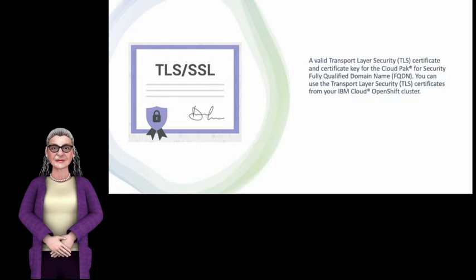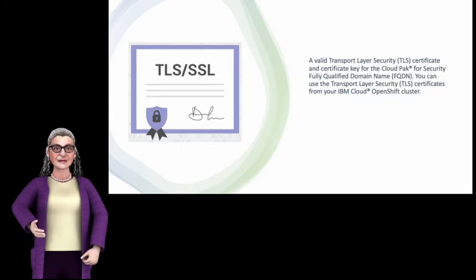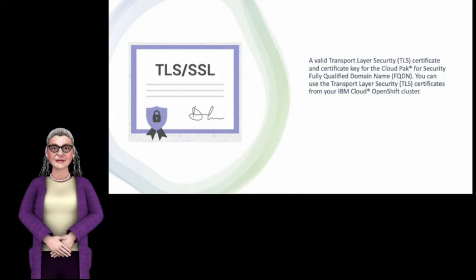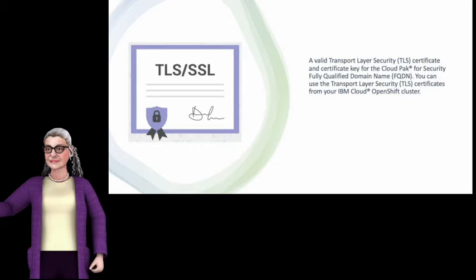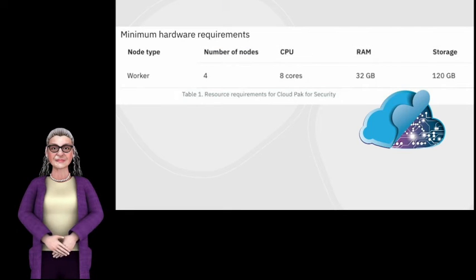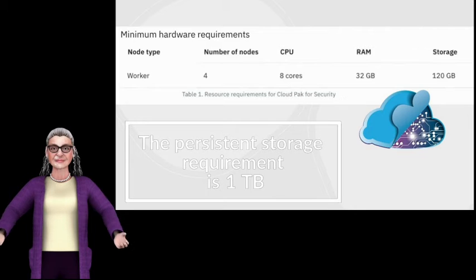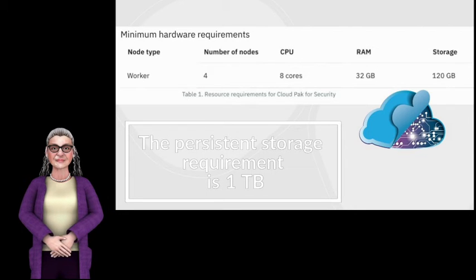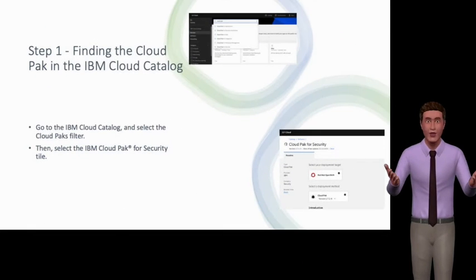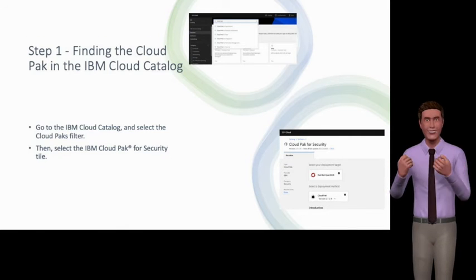You can use the transport layer security certificates from your IBM Cloud OpenShift cluster. Review the minimum hardware requirements. Note that the hardware requirements will be validated automatically by the IBM Cloud Catalog prior to deployment. Step 1: Finding the Cloud Pak in the IBM Cloud Catalog.